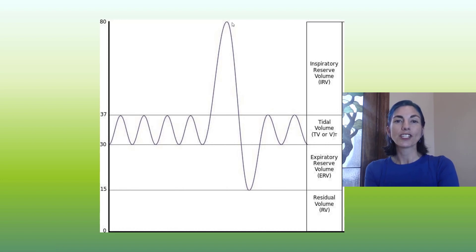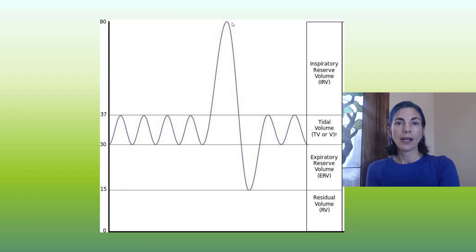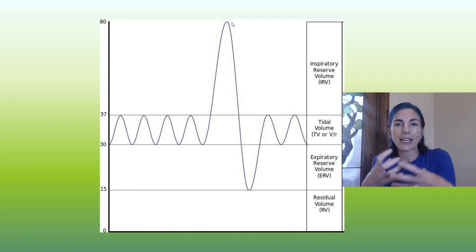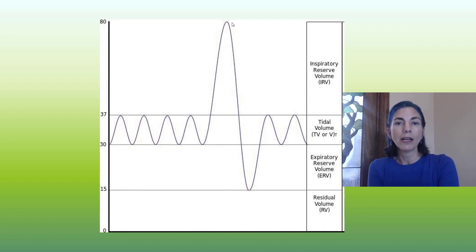The converse is also true — you can exhale out more than you typically do. The extra amount you can push out of your lungs by making your ribcage as small as possible is called your expiratory reserve volume.